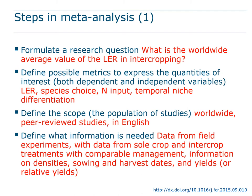The steps in this meta-analysis were: a research question about the worldwide average LER; defined metrics using the LER; explanatory variables including species choice, nitrogen input, and temporal niche differentiation; defined scope — worldwide, peer-reviewed, English-language studies. Information needed included field experiments with data from sole crop and intercrop treatments with comparable management, information on densities, sowing and harvest dates, and yields. Pot experiments, reviews, and modelling studies were excluded.